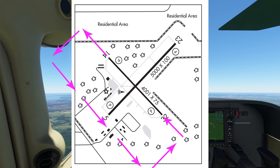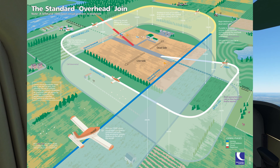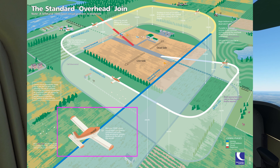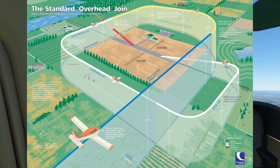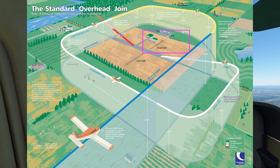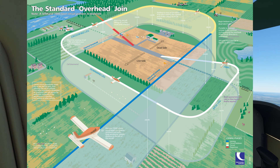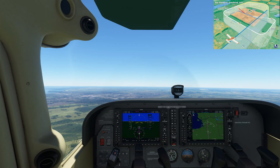The UK way of entering the pattern would be a standard overhead join. This includes a pass over the airport 1000 feet above the pattern to check for traffic, the windsock, and any ground signals, and then proceeding with a join. The runway divides areas described as the live side, which is the side that the pattern is active, and the dead side, which in this case is to the east of runway 32 at Okeechobee — the direction we're approaching from — and is the opposite side to where the pattern is published.